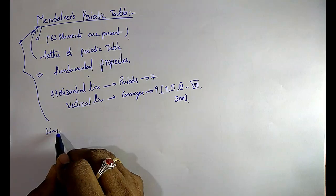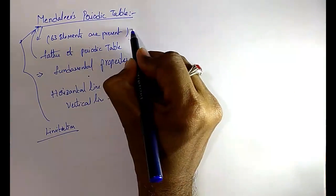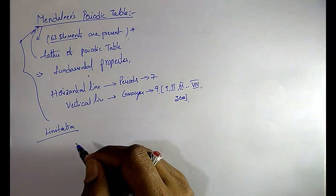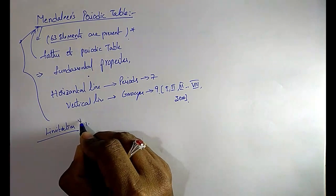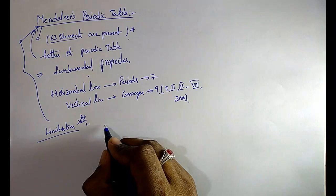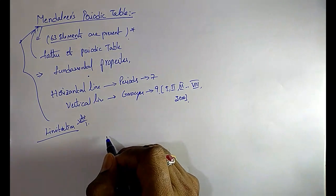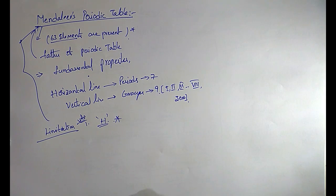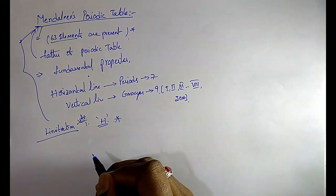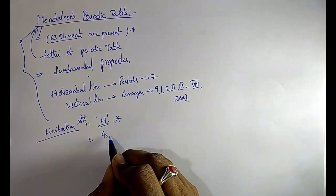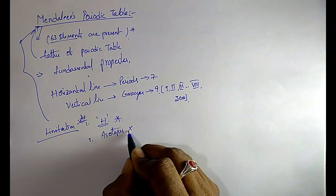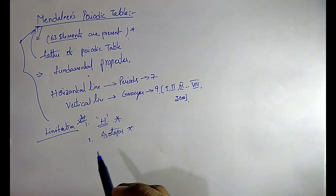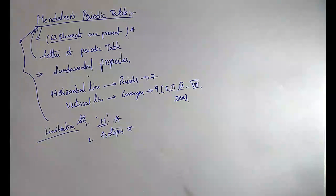The limitations of Mendeleev's periodic table: at the time of Mendeleev only 63 elements were present, but now that number has increased. The main limitation is that he could not assign the correct position to hydrogen. Also, at the time of Mendeleev, isotopes were not discovered, which was a big challenge to his periodic table.